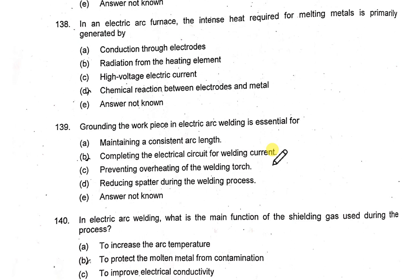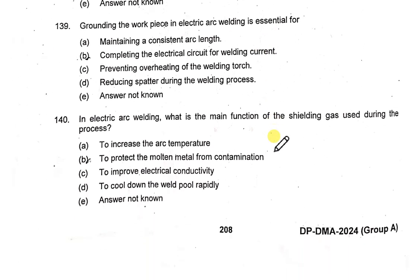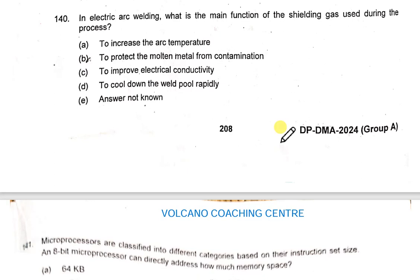In an electric arc furnace, the intense heat required for melting metals is primarily generated by conduction through electrodes. Grounding the workpiece in electric arc welding is essential for completing the electrical circuit for the welding current.